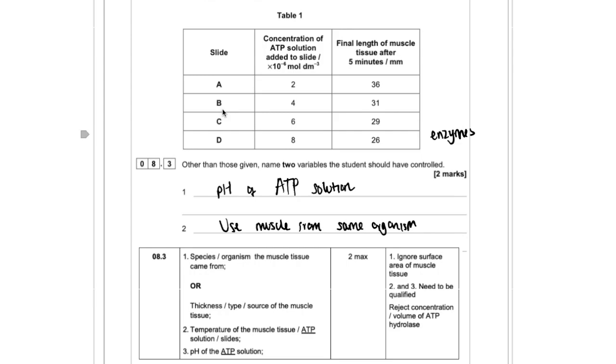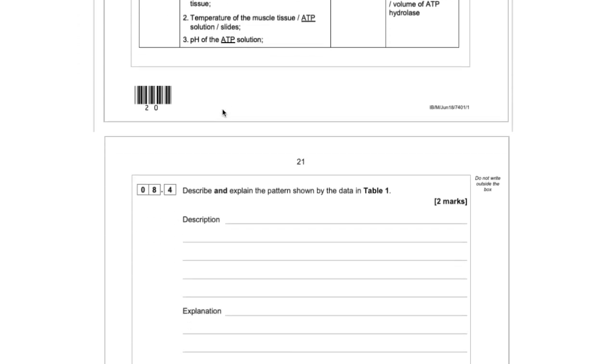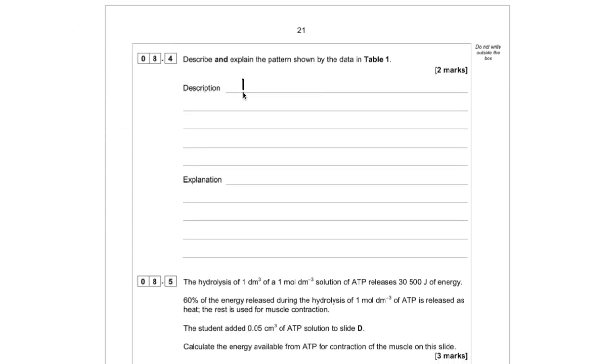And if we're explaining that, we want to link it to what this enzyme is doing. So our ATP hydrolase is hydrolyzing our ATP. When we hydrolyze ATP, we release energy. And it's important to say that we release energy and not that we produce energy. Because energy can't be created or destroyed. We're simply releasing it from another molecule.